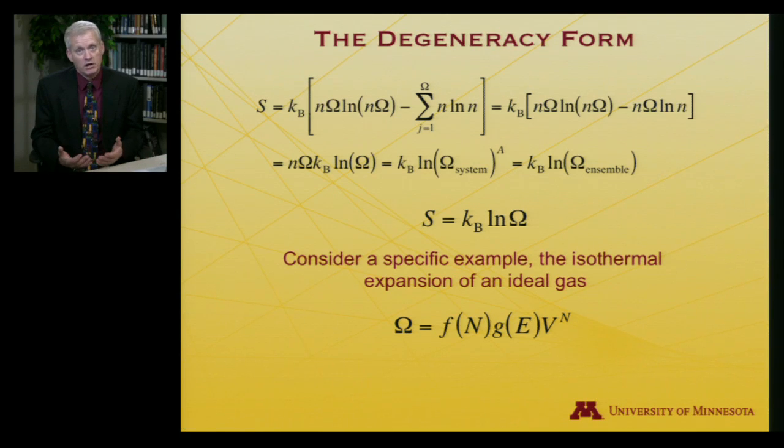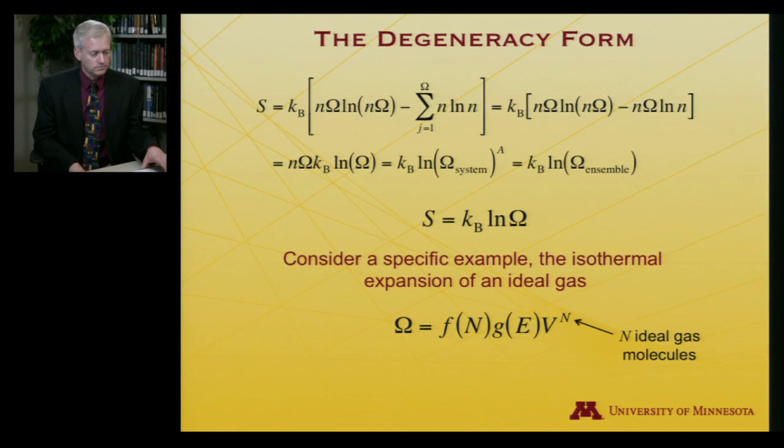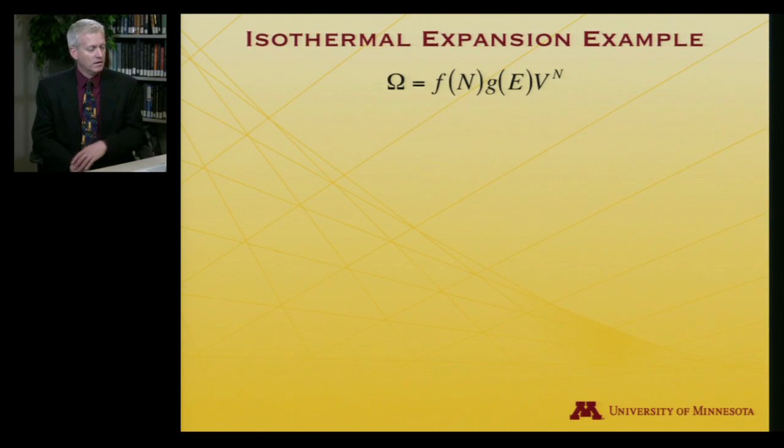And then finally, as I make the volume bigger, every single one of the molecules is going to have an opportunity to explore more volume. And so there's a volume to the nth power term in the degeneracy. It's an ideal gas. None of the molecules interact with each other. They're all getting to explore more volume. So product of all of these is the degeneracy.